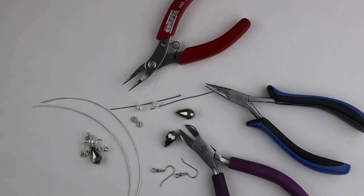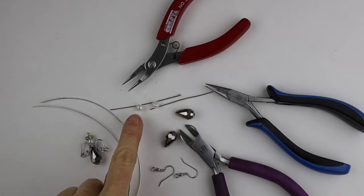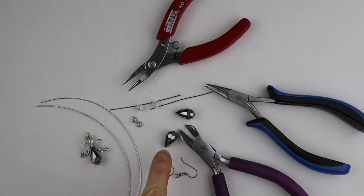So what you're going to need for this project are your tools, some earring hooks, a couple of head pins, two round beads, there's six millimeter, couple of teardrop beads, spacer beads, and about six to eight inches of 20 or 22 gauge wire. This is artistic copper wire.